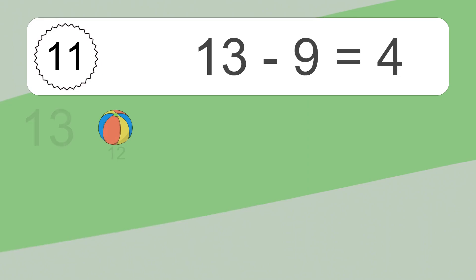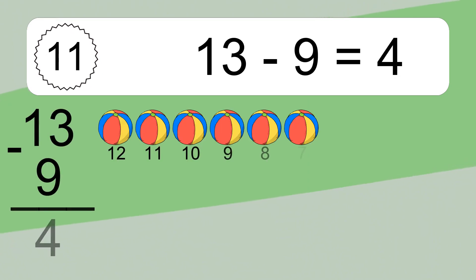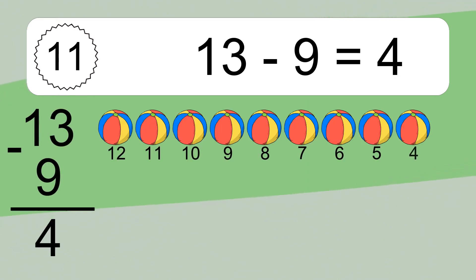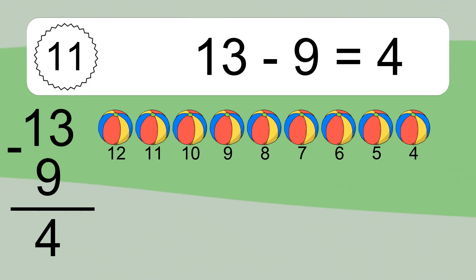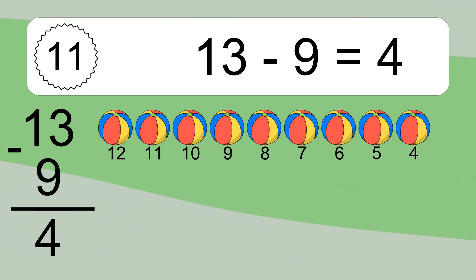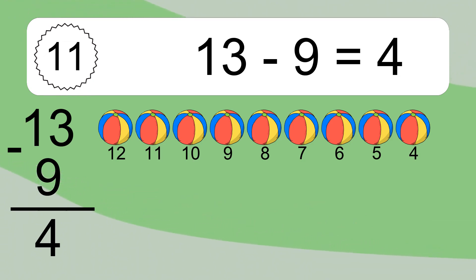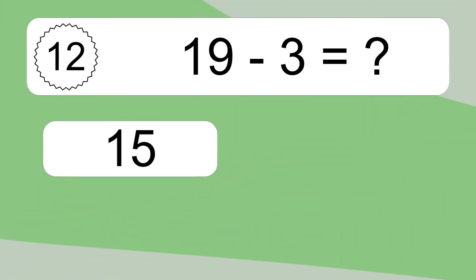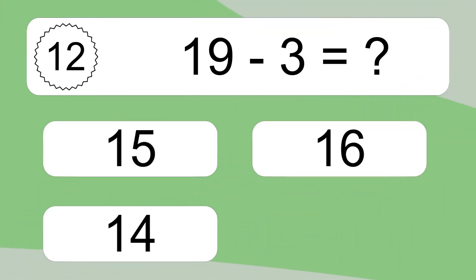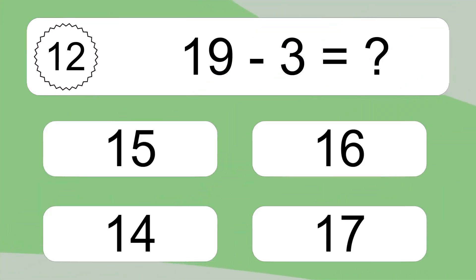13 minus 9 equals what? 13 minus 9 equals 4. Let's count it: 12, 11, 10, 9, 8, 7, 6, 5, 4.